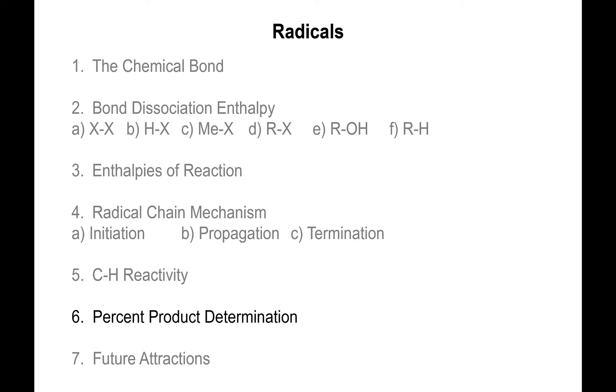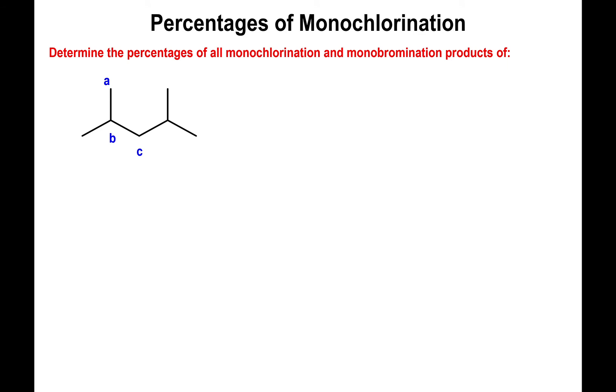We are ready to calculate the expected yields of products formed from monochlorination and monobromination. In the previous video, I showed you the derivation of the relative rates of monobromination and monochlorination. You won't have to do that in future assignments, but you're going to use that information to calculate the percentages of monochlorination and monobromination products. So we're going to start with monochlorination.